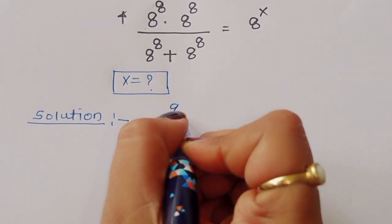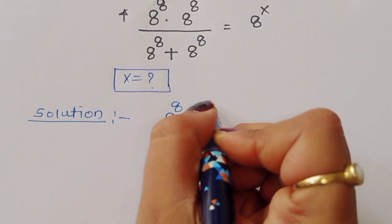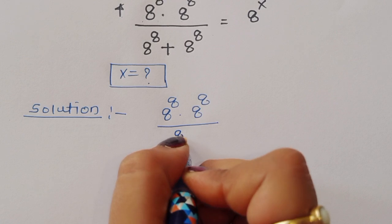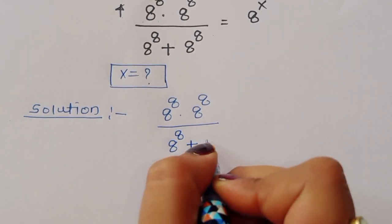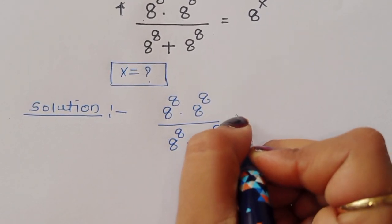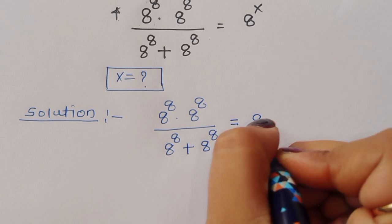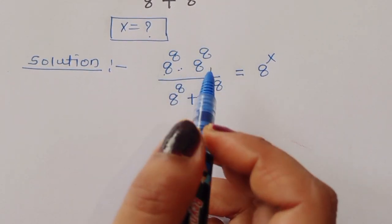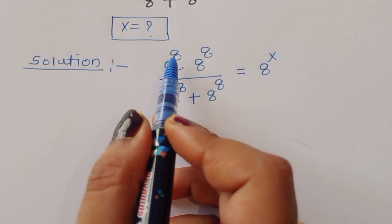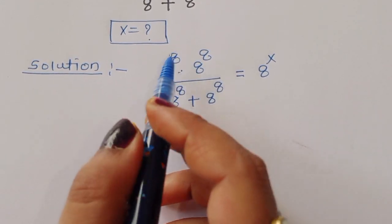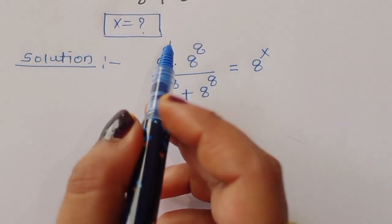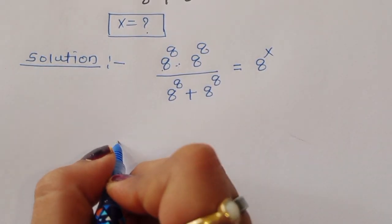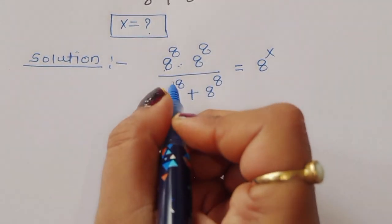8 power 8 times 8 power 8, divided by 8 power 8 plus 8 power 8, is equal to 8 power x. Now for 8 power 8 times 8 power 8, we use the formula: a power b times a power b equals a power b plus c. So we can write 8 power 8 plus 8.